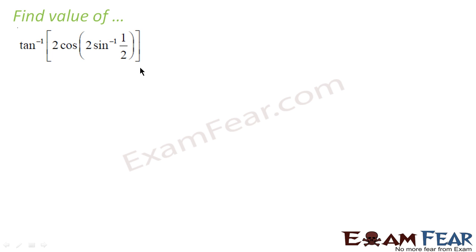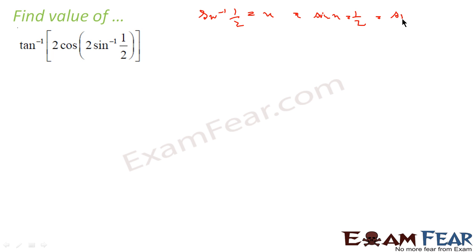Let's take one more example. We have to find the value of tan inverse of 2·cos(2·sin⁻¹(1/2)). First, find sin⁻¹(1/2). Let this be x, so sin(x) = 1/2, which equals sin(π/6), since π/6 is in the principal interval. So sin⁻¹(1/2) = π/6.